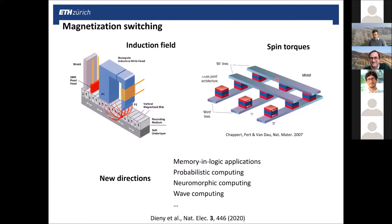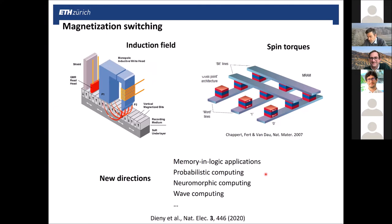If you have these torques, you can manipulate the magnetization — you can replace the induction of tiny bits on a hard drive by current injection into a magnetic structure. This has been known for about two decades for spin transfer torques, and it is also true for spin-orbit torques. So it becomes possible to scale down magnetic bits and directly manipulate them using electric currents. These spin torques also enable new directions of research and possible applications, for example by combining memory and logic functionalities, exploiting probabilistic computing, neuromorphic computing, as well as computing with waves or magnons.